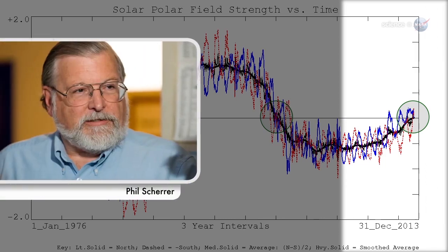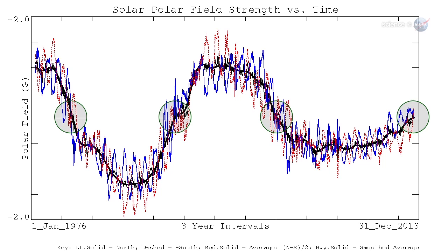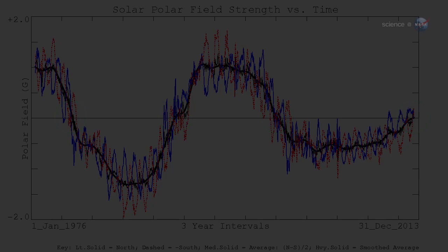Solar physicist Phil Shearer, also at Stanford, describes what happens. The Sun's polar magnetic fields weaken, go to zero, and then emerge again with the opposite polarity. This is a regular part of the solar cycle.